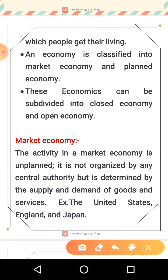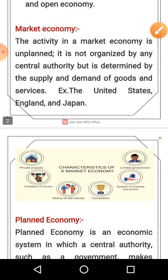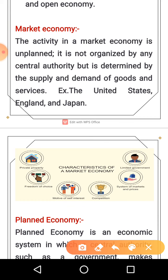Economy is classified into planned economy, market economy, and open economy. Market economy totally depends on the supply and demand of goods and services; government has very little or no control. All economic activities are decided by demand and supply. Government control is very low, and it works on profit. Examples are the United States, England, and Japan.